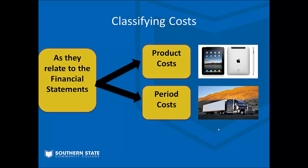Finally, we can classify costs according to how they relate to the financial statements. Product costs are the costs that go directly into making the product — that's your direct labor, direct materials, and overhead. These are inventoriable, meaning that cost eventually ends up in your inventory balance. The other type is a period cost, which benefits a specific period. A common example is distribution cost — the cost to get the product from point A to point B to the customer. That's expensed in the period it occurs; it doesn't go into inventory, it just gets expensed.